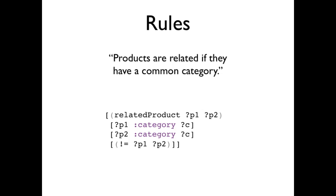Datomic rules allow you to build named combinations of query patterns that you can then use in the same places that you would use a simple data pattern. The rule head names the rule, and establishes variable names that will be bound by the rule. The rule body is a set of query patterns, all of which must be made true to satisfy the rule. Here, products P1 and P2 are related if they have a category C in common.